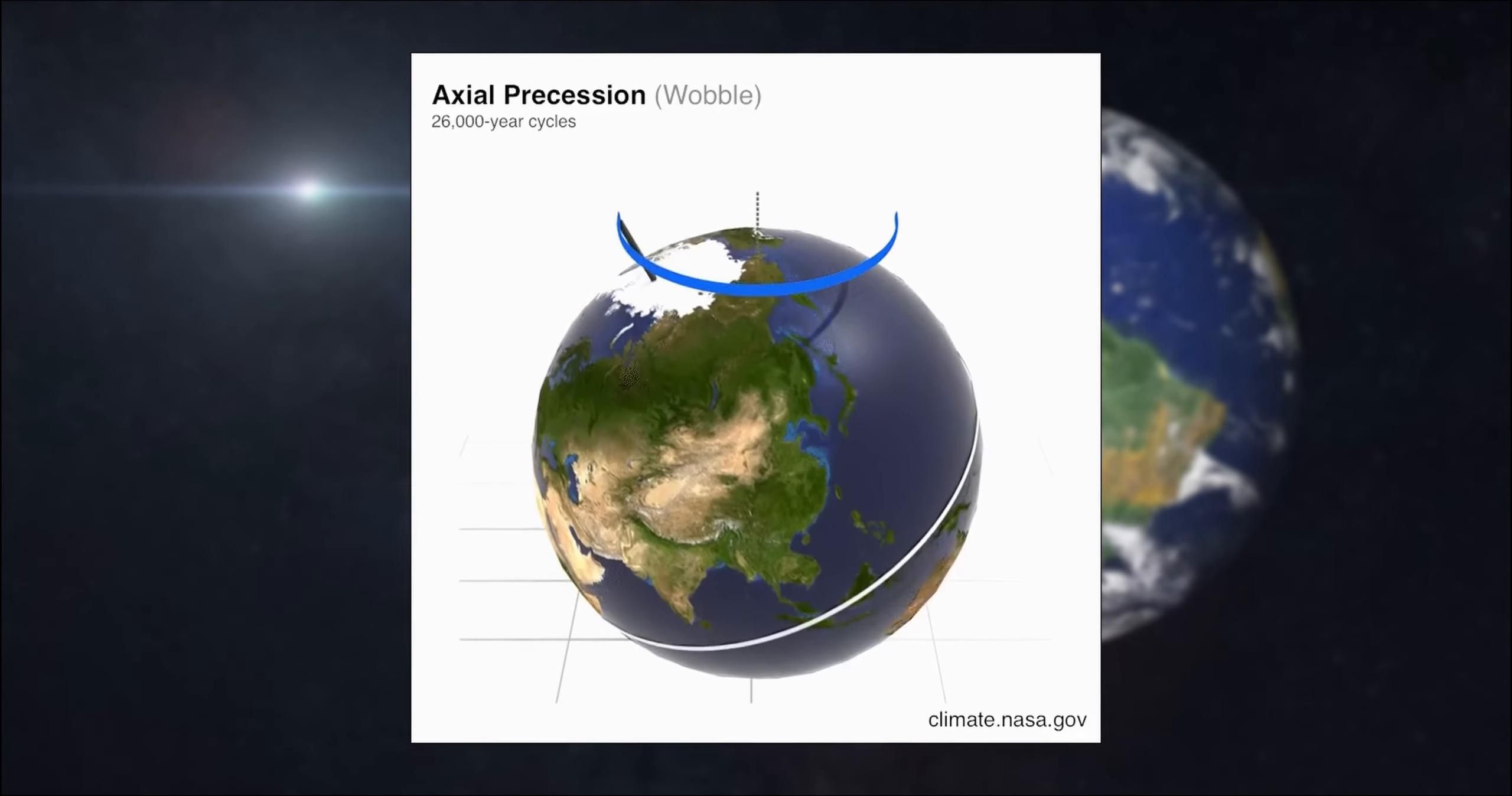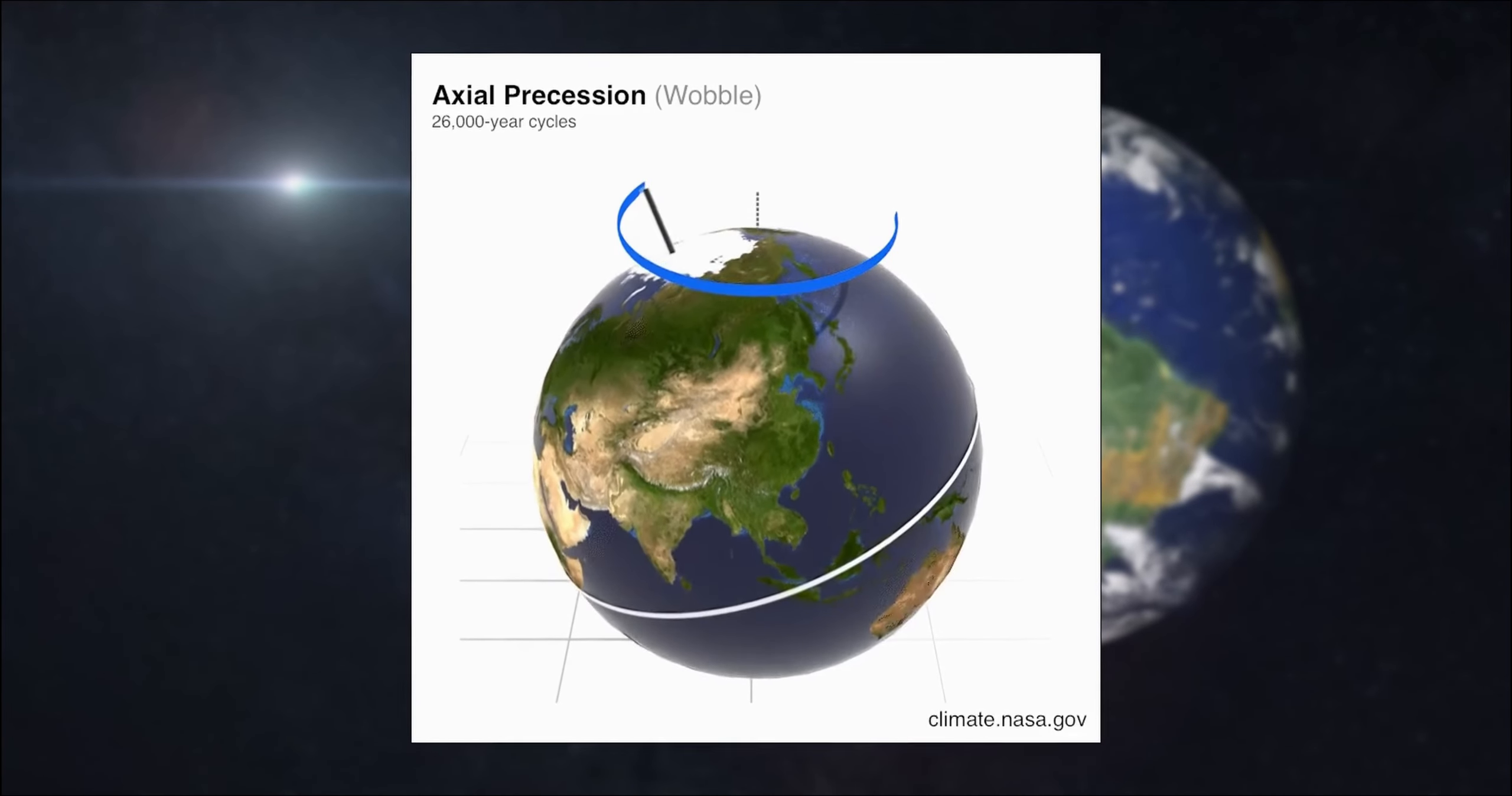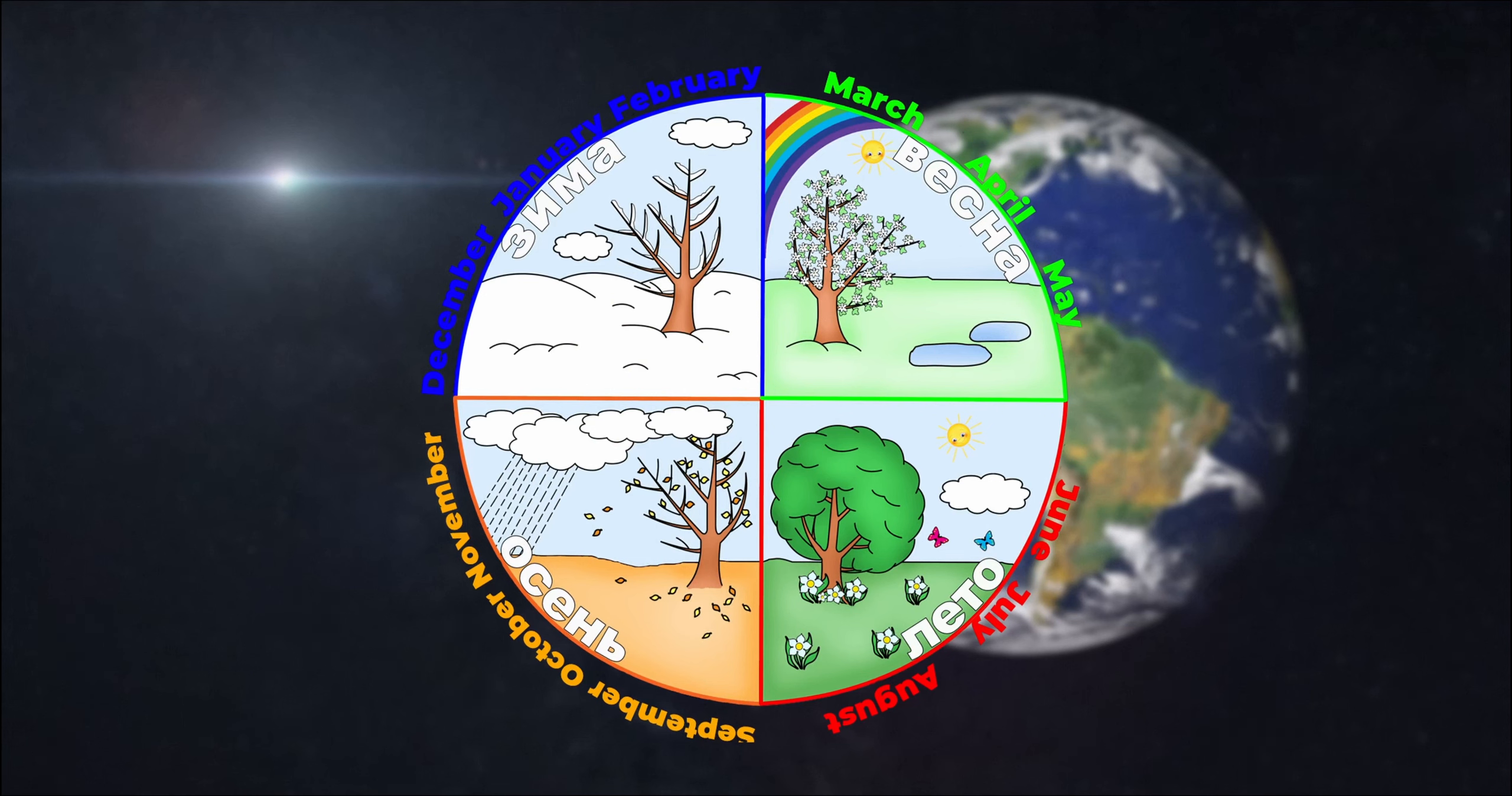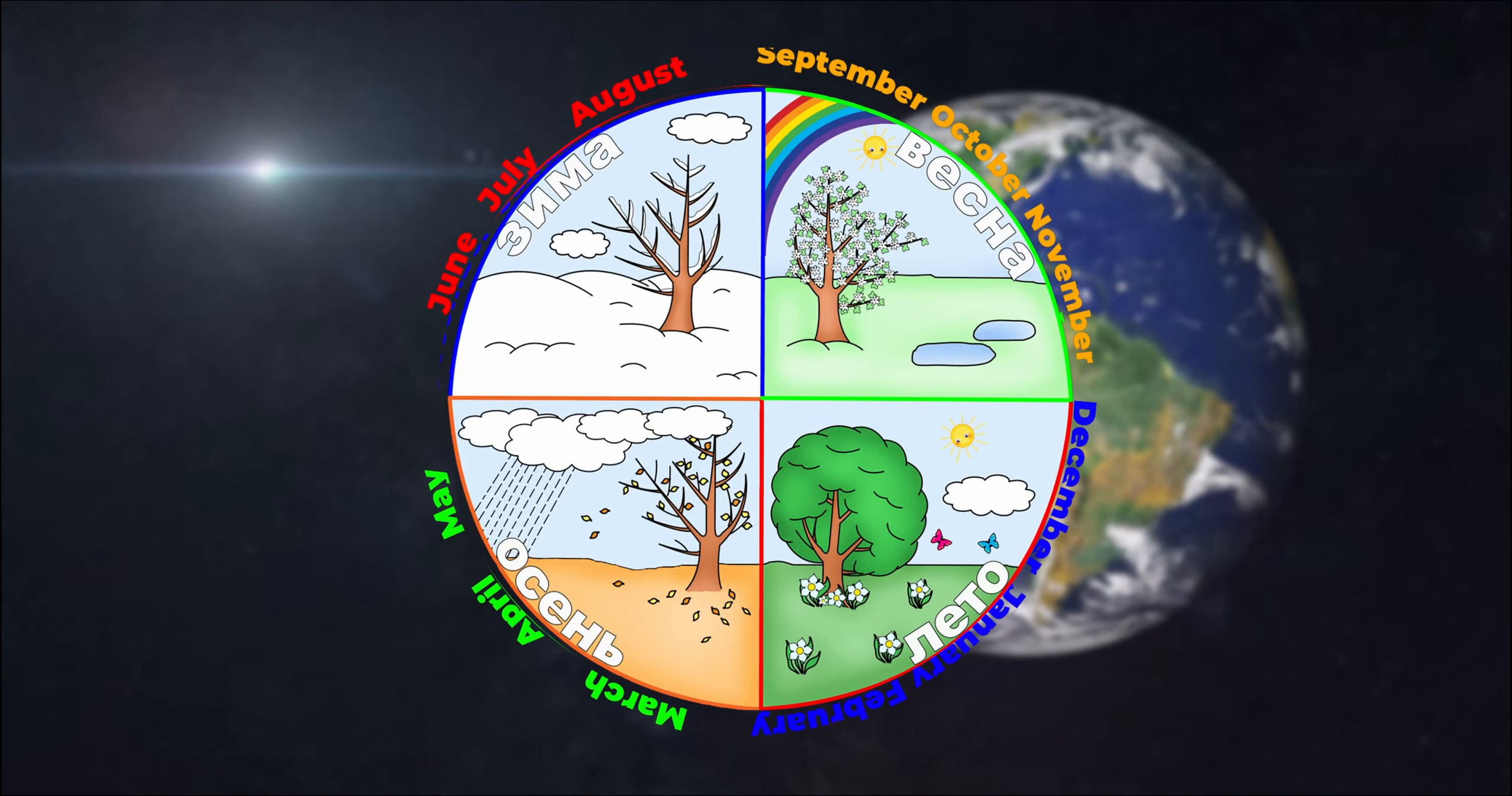This is called axial precession. The direction of our axis is rotating. One revolution in about 26,000 years. What it gives us? Three big and significant things. The first is purely formal, but nevertheless, winter and summer replace each other in places.